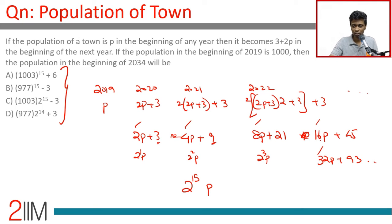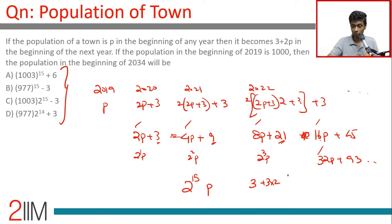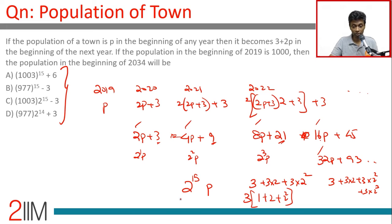Next, consider the constant part. It starts at 3, becomes 9 — that's 3×2 + 3. The next step is 3·2² + 3·2 + 3, then 3·2³ + 3·2² + 3·2 + 3. For the term 21: that's 3 + 3·2 + 3·2², and if we extract a 3 outside, it's 3(1 + 2 + 2²).